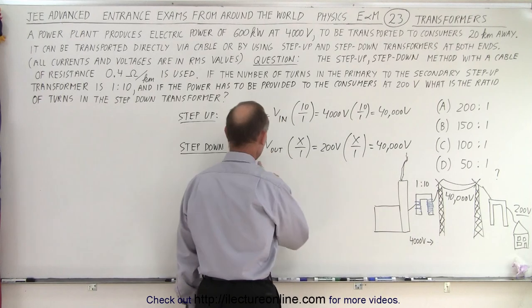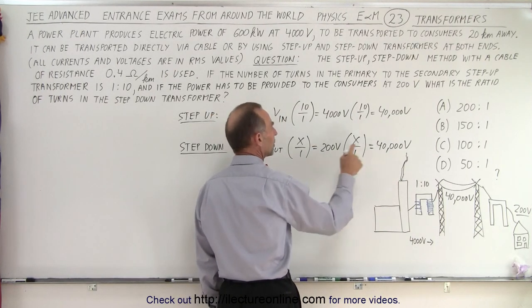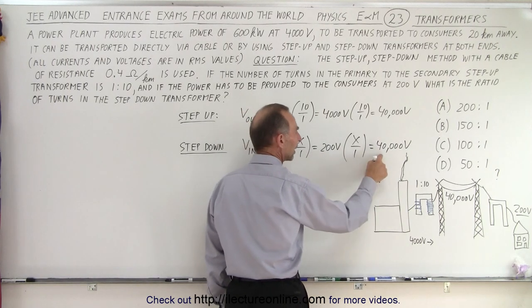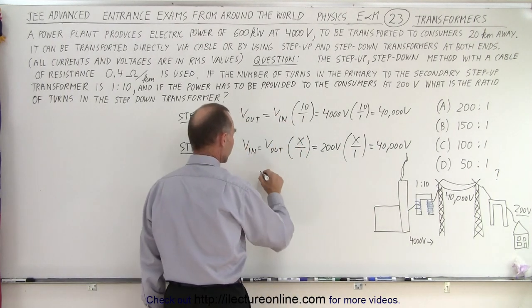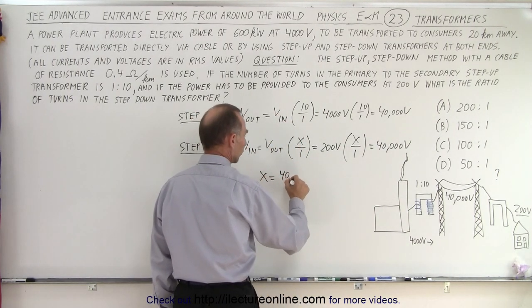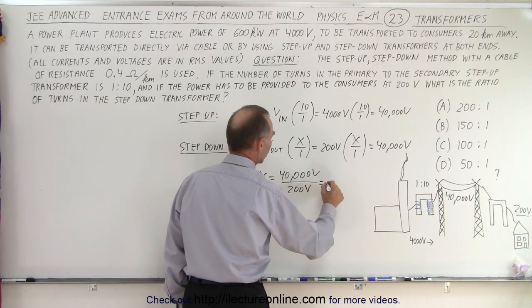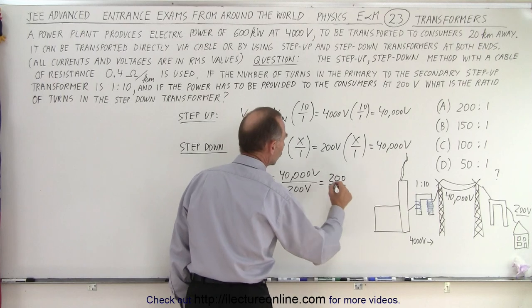So the input voltage is 40,000 volts, the output is 200 volts. So what do I need to multiply the 200 volts with to get 40,000 volts? So that means that X is equal to 40,000 volts divided by 200 volts, which is 200 to 1.